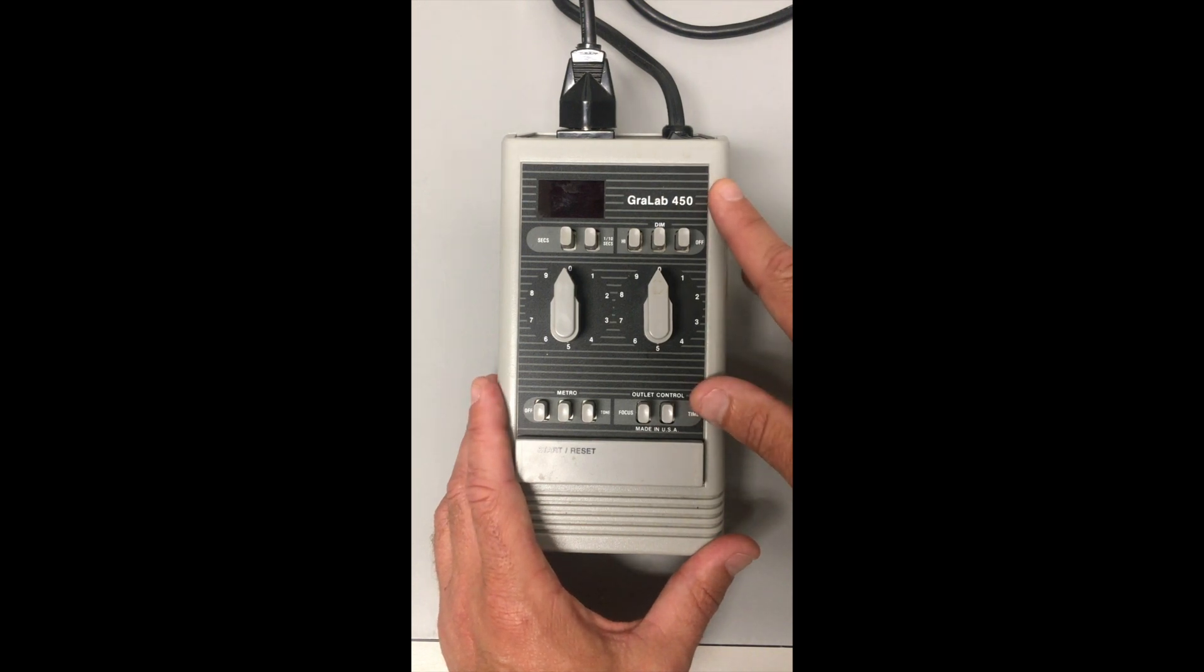When you come into the space, if you have this timer at your station, you will turn it on by switching the switch here at the top. When you come in it should be off, so you switch it on. It comes on and you know it's operating when this screen lights up and you get your numbers there.